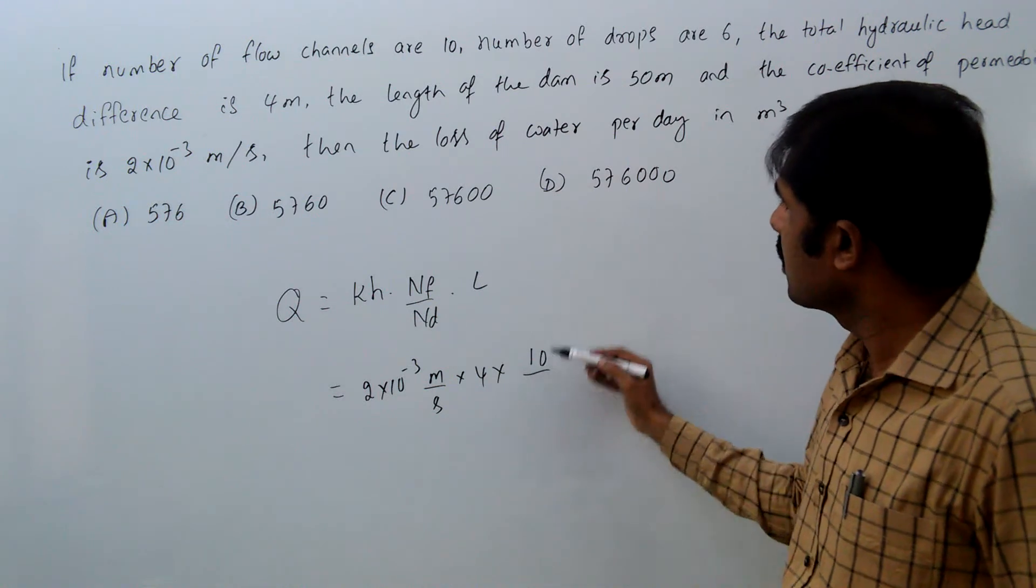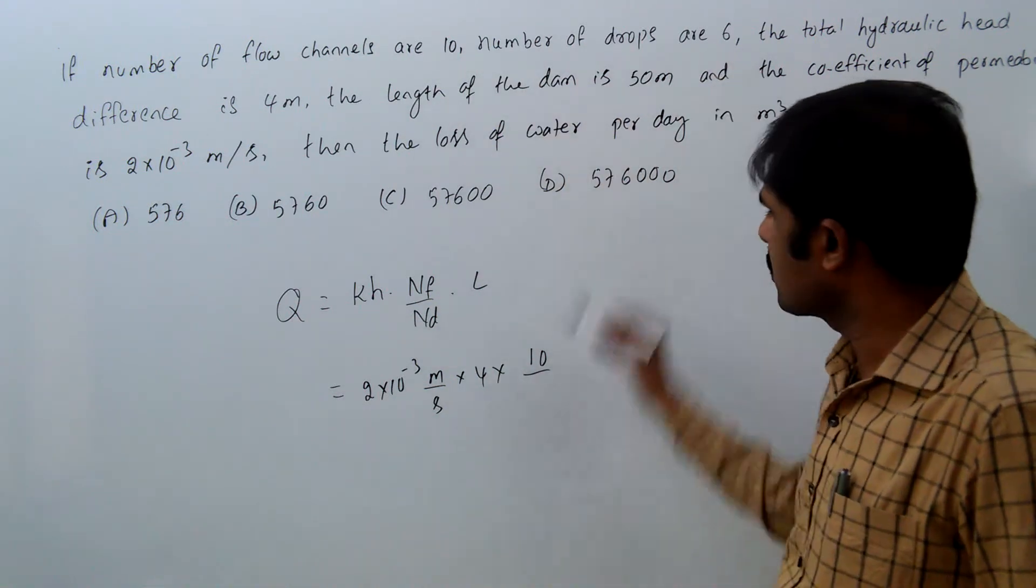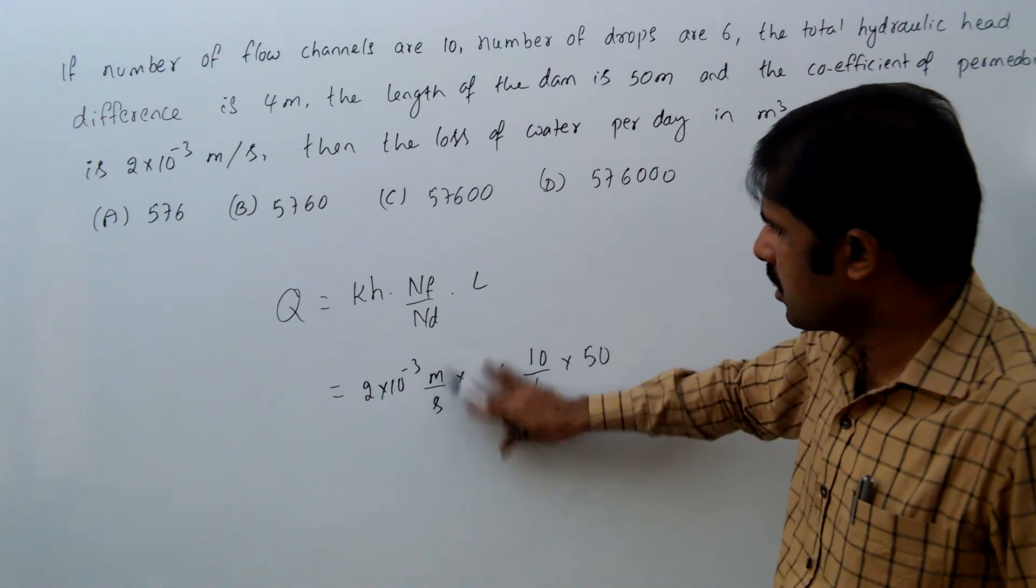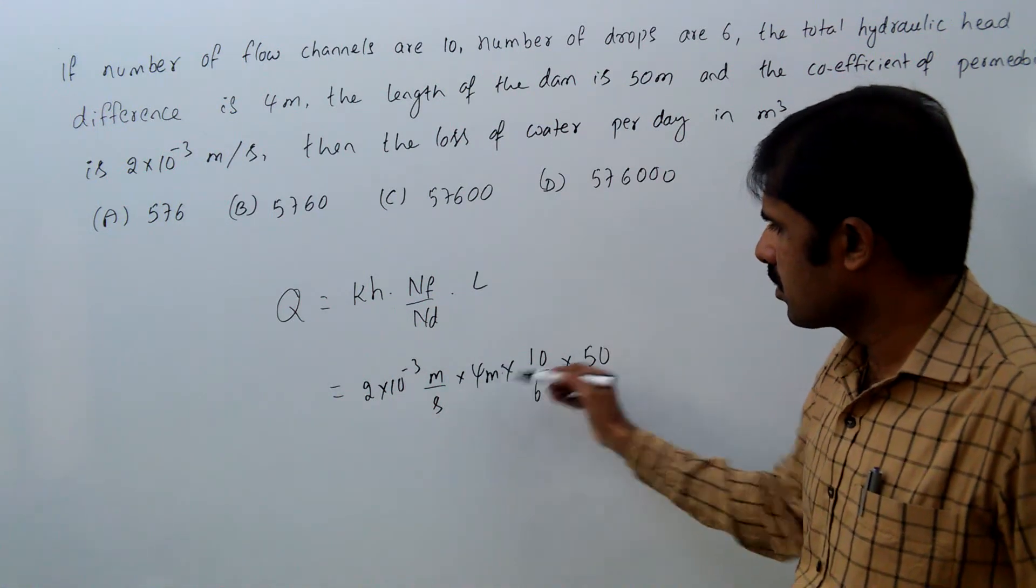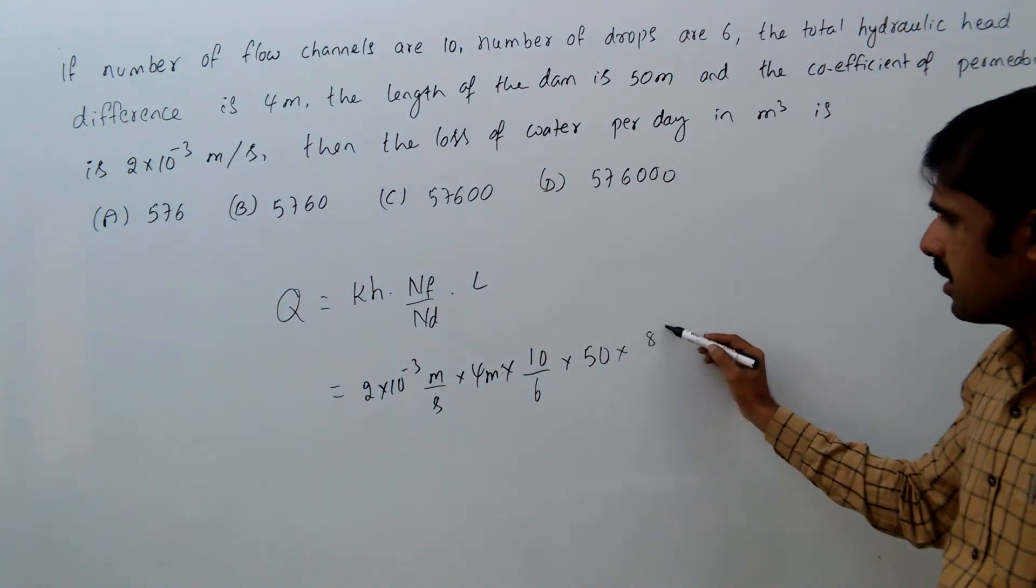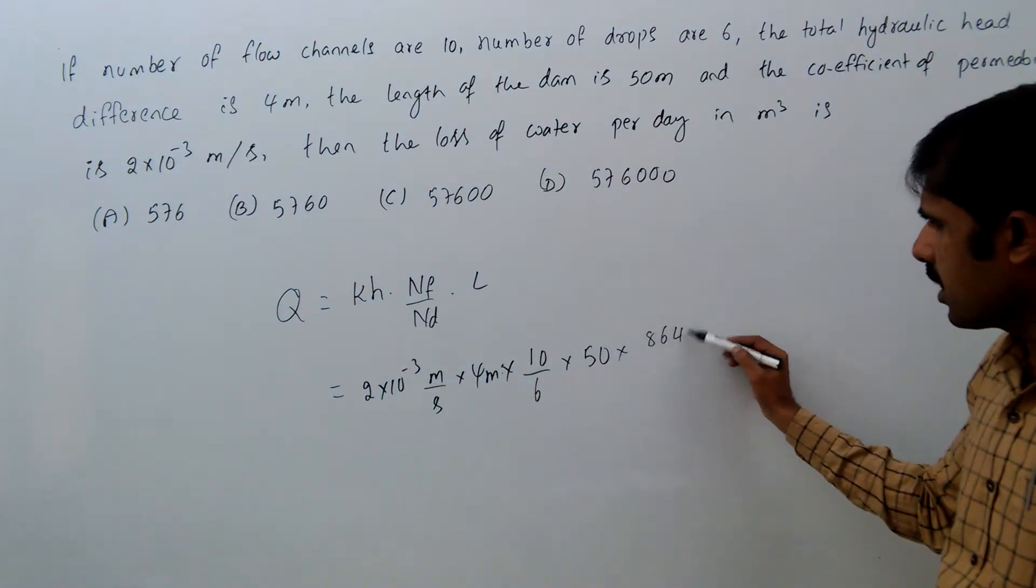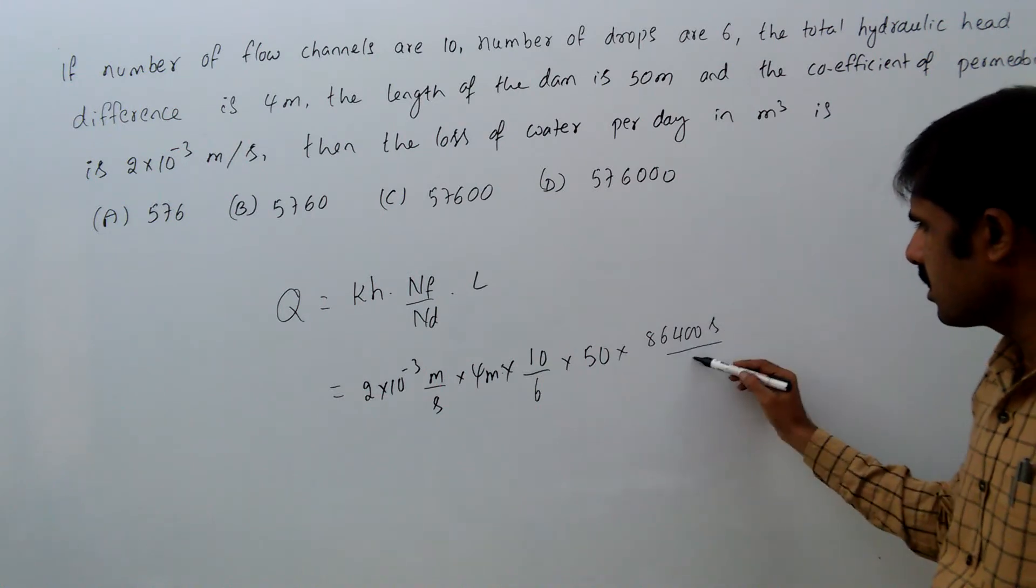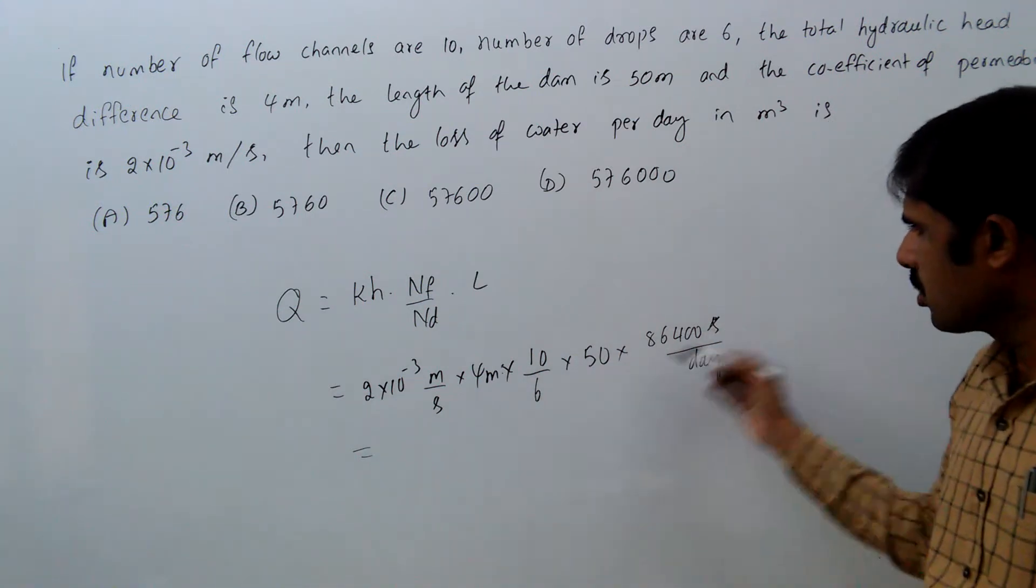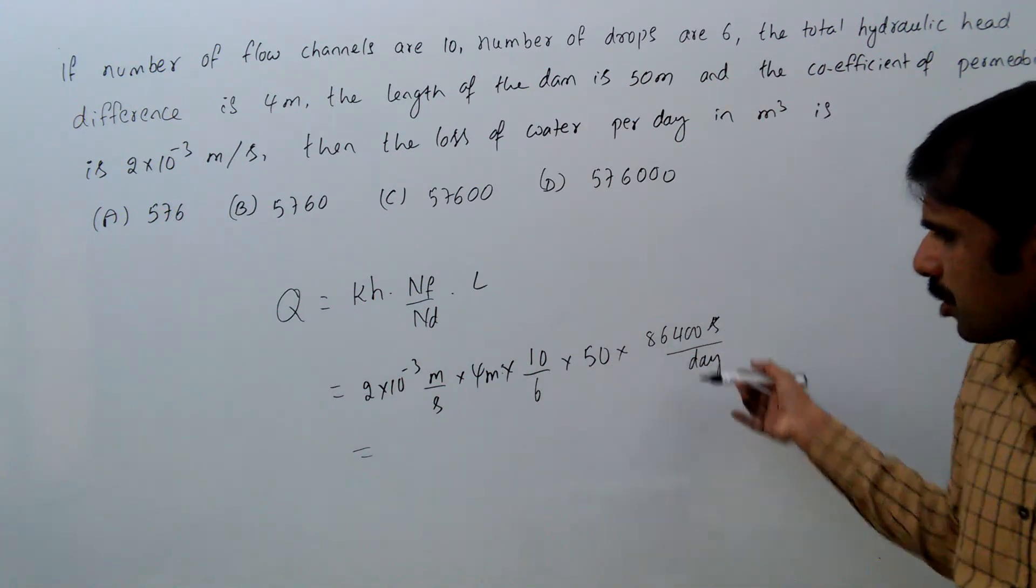10, number of drops 6, length 50 meters. This is per second, so 86400 seconds per day. So we will get the discharge in meter cube per day.